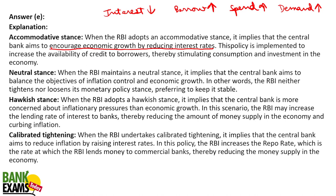Neutral stance means stability. The central bank aims to balance the objectives of inflation control and economic growth. The RBI is neither tightening nor loosening its monetary policy — it keeps interest rates stable, neither increasing nor decreasing them.